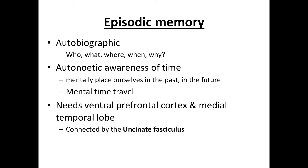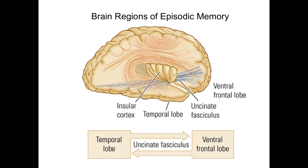The ventral prefrontal cortex, the medial temporal lobe, and the thalamus are very important for episodic memory. These two areas of the brain are connected by the uncinate fasciculus. You can see the ventral part of the frontal lobe and the temporal lobe, and in blue the fibers that form the uncinate fasciculus. The temporal lobe and ventral frontal lobe are connected by this structure, which allows for communication between them.